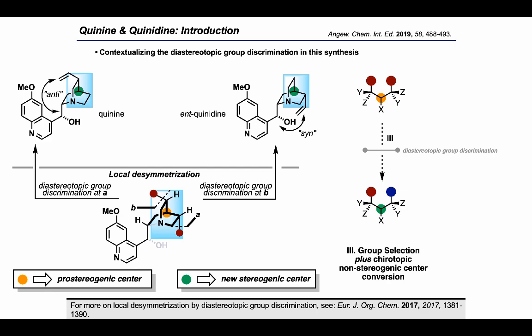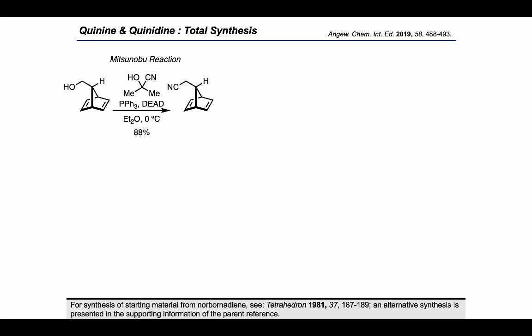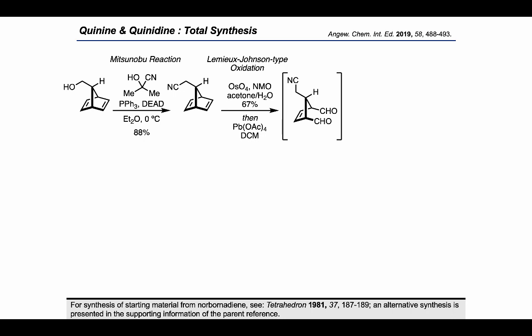With that, we'll take a look at their route. Starting from this bicyclic diene, they use the cyanohydrin of acetone in combination with triphenylphosphine and DEAD to perform a Mitsunobu reaction and install the cyano group. Then Lemieux-Johnson type oxidation allowed alkene cleavage on the right side to give this dialdehyde. They then used sodium cyanoborohydride and para-methoxybenzylamine to carry out a double reductive amination and form this new bicyclic system bearing a seven-membered ring.